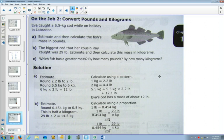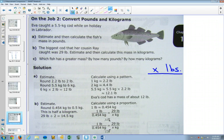So what we have here, we want to convert pounds to kilograms. Eva caught a 5.5 kilogram cod on holiday in Labrador. We're going to figure out what that is in pounds. And then we're going to look at some other calculations and changing from pounds to kilograms. So kilograms to pounds, again, will set up our proportion. We want to figure out how much it is in pounds. We write out that's what we don't know. And we know that it's equal to 5.5 kilograms.